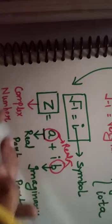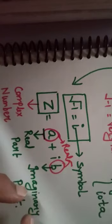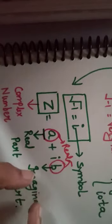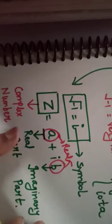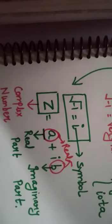To complex number kya hai? Complex number real part and imaginary part ka combination hai. So this is just basic information about complex number z. In next video we will learn properties of i.